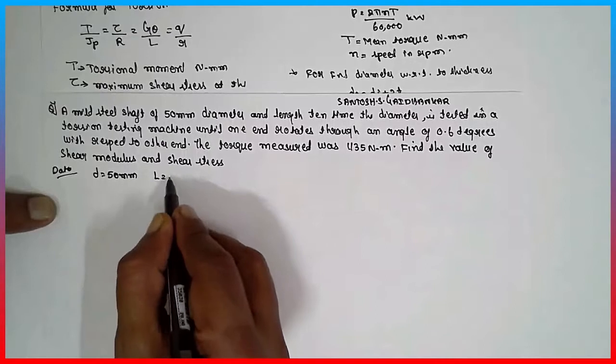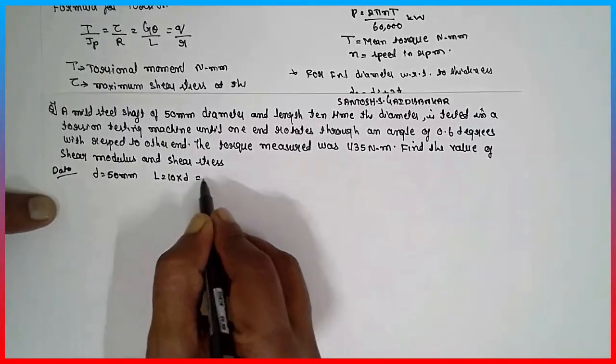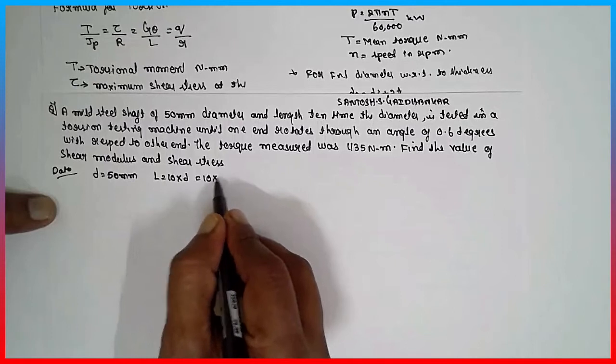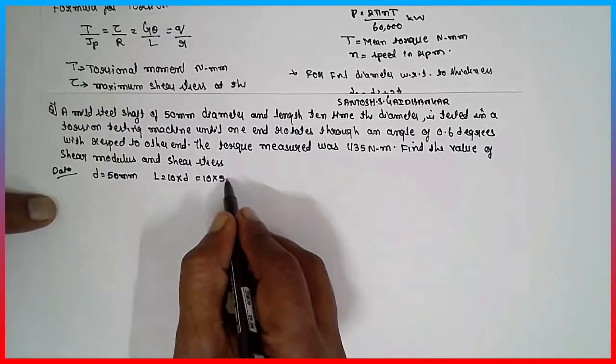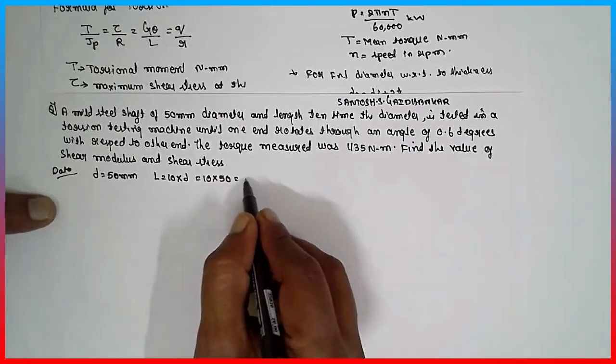Length is 10 times the diameter, that means 10 into diameter 50. 10 into 50. It will be 500 mm.